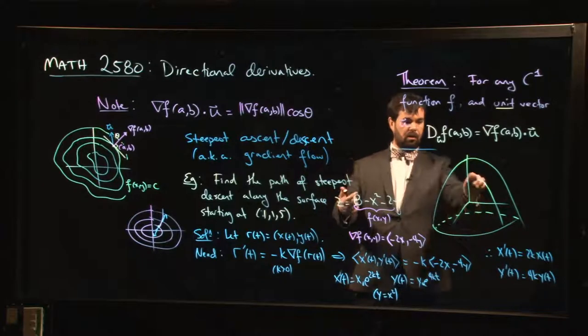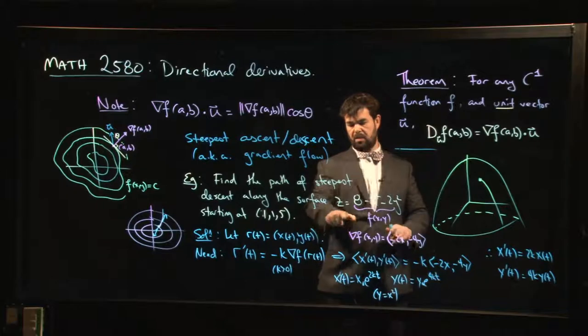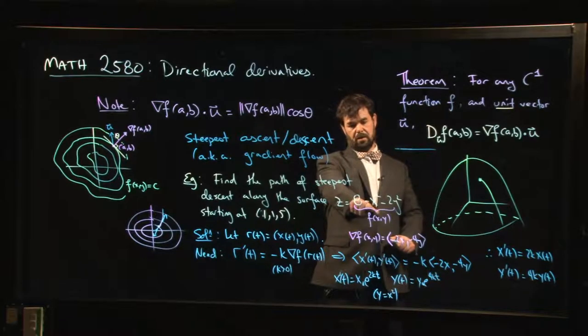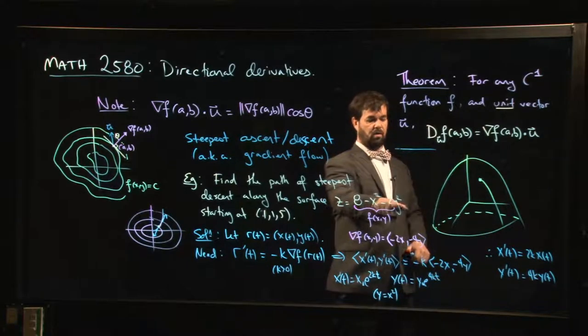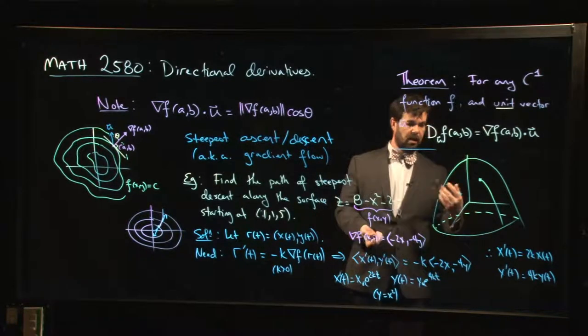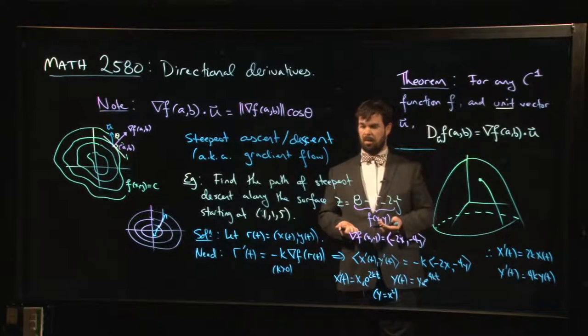Finally, if you wanted the path on the surface, how do you do that? Well, once you have x and y, you know how to get z. So z(t) would be 8 minus x(t) squared minus 2 times y(t) squared. You can plug that in. Now you know what z looks like, and you can compute that path.